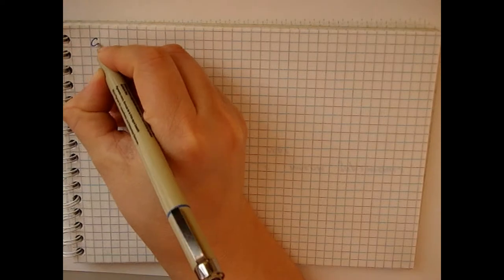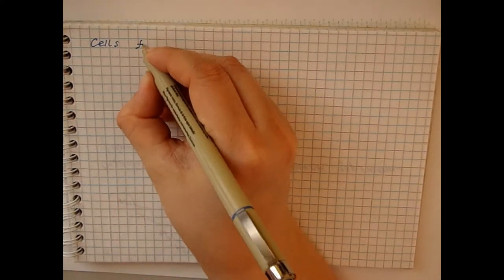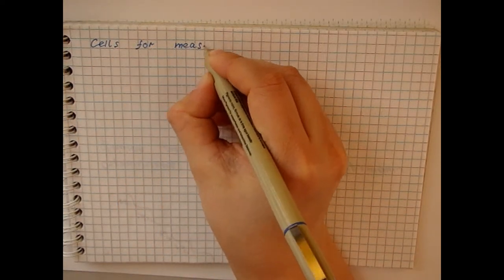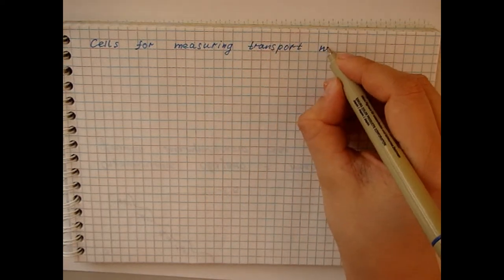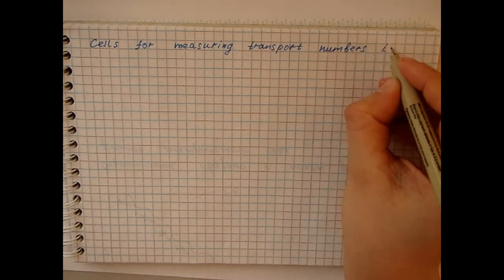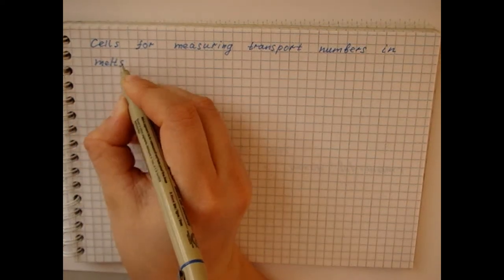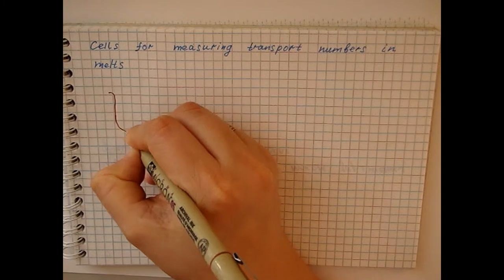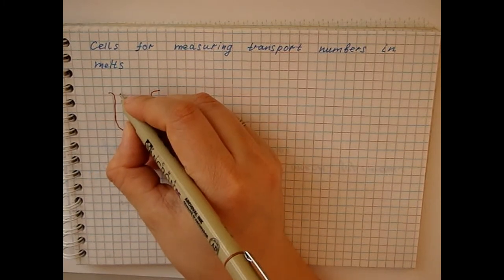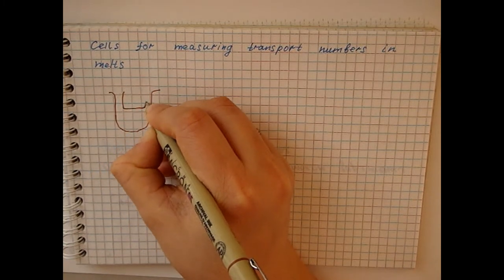The membrane, however, does not completely eliminate gravity flow. Therefore, special cells have been proposed for measuring transport numbers in individual melts. In one of the cells, electrical contact between the cathode and anode spaces is realized through a porous membrane.